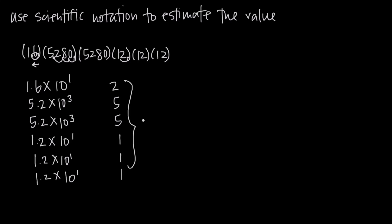So all of these multiplied together is going to give us 50. And then here, we want to look at all of our powers of 10. So 10 to the first times 10 to the third times 10 to the third times 10 to the first times 10 to the first times 10 to the first. Because all the bases are the same, all the bases are equal to 10, we know that we can just add the exponents.